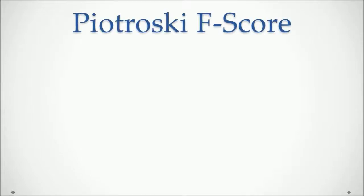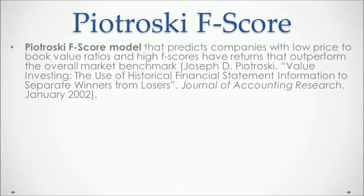The third and last model to analyze financial statement ratios is Piotrowski's F-score. The model predicts that companies with low price-to-book value ratios and high F-scores have returns that outperform the overall market benchmark. We'll study price-to-book value ratios in the next section, but first we must understand the F-score. For a full reference, Joseph Piotrowski's 'Value Investing: The Use of Historical Financial Statement Information to Separate Winners from Losers,' in the Journal of Accounting Research from January 2002, is a recommended reading, where he describes the F-score and how it's calculated.